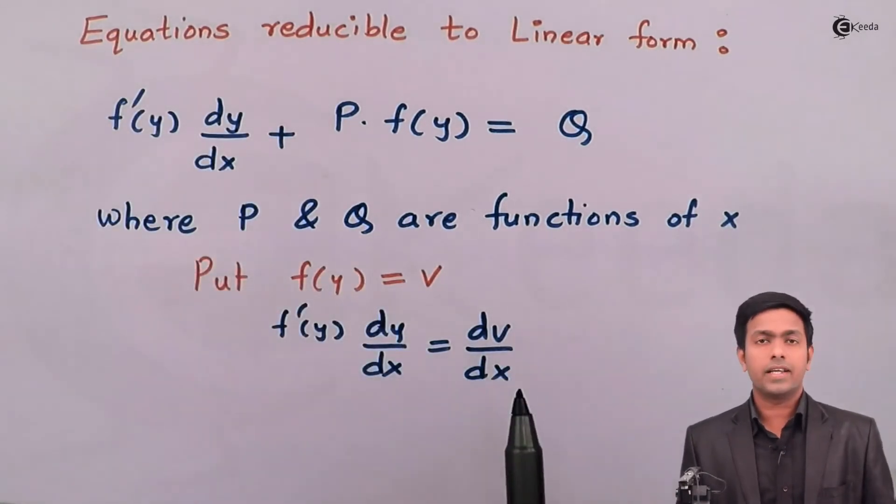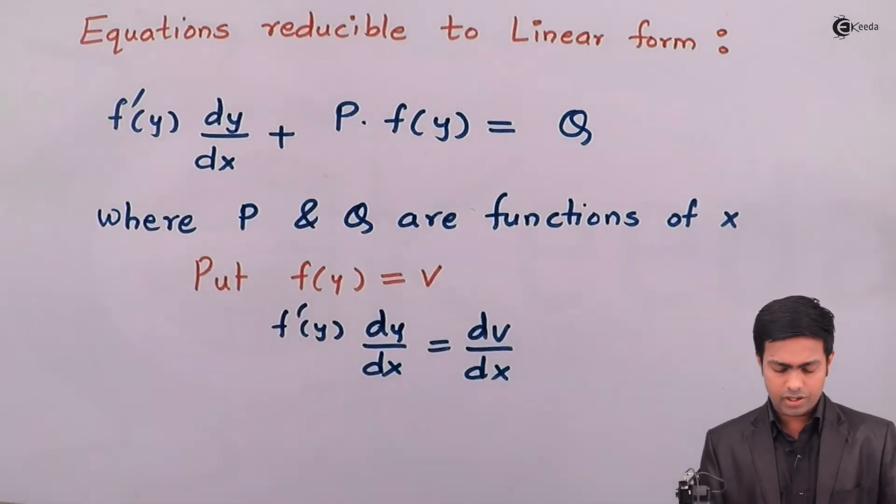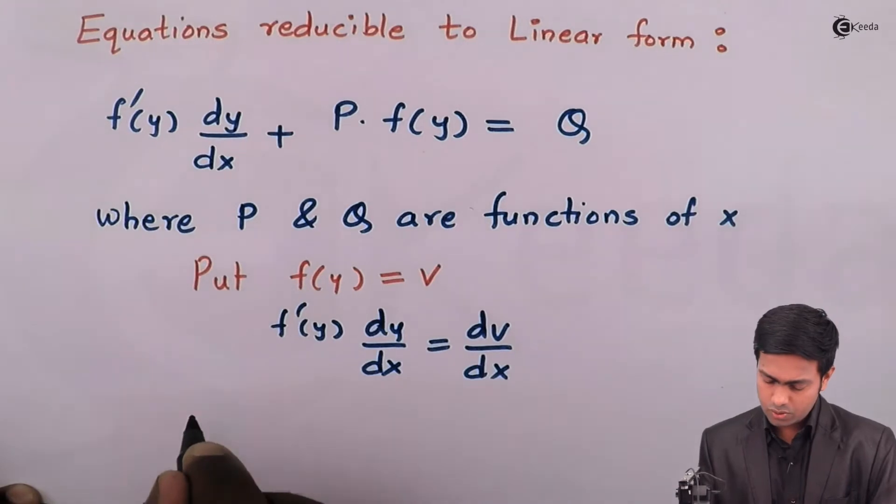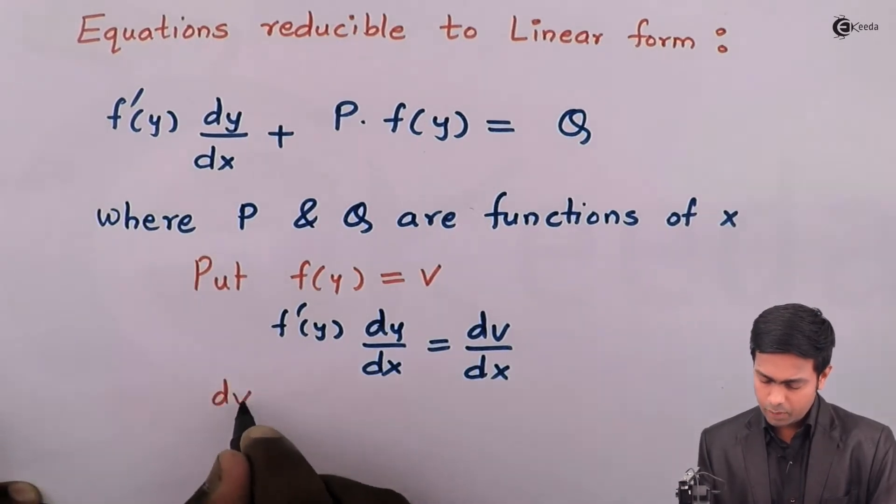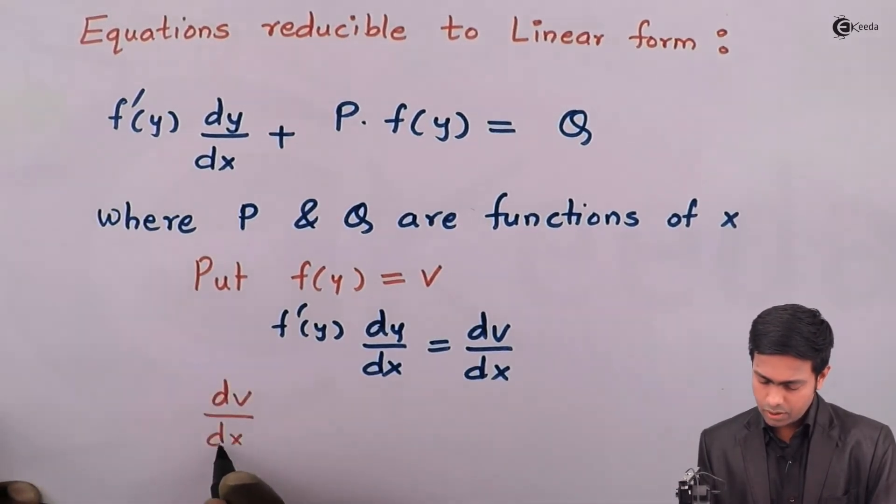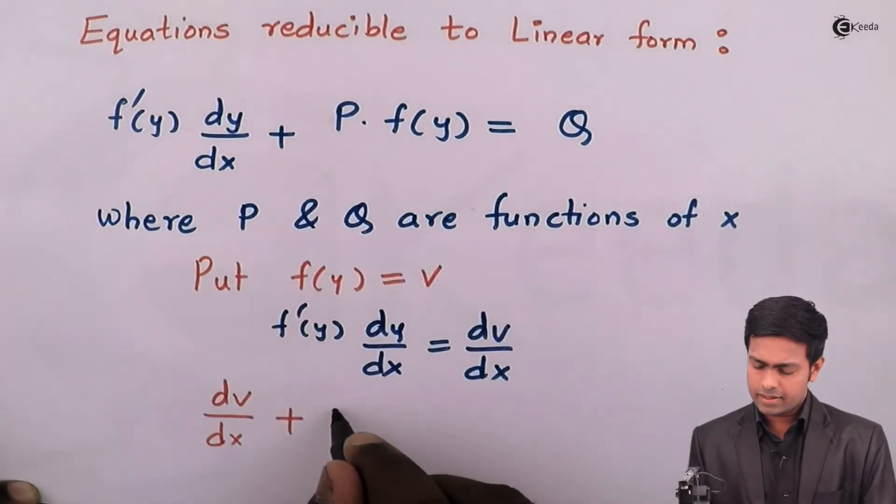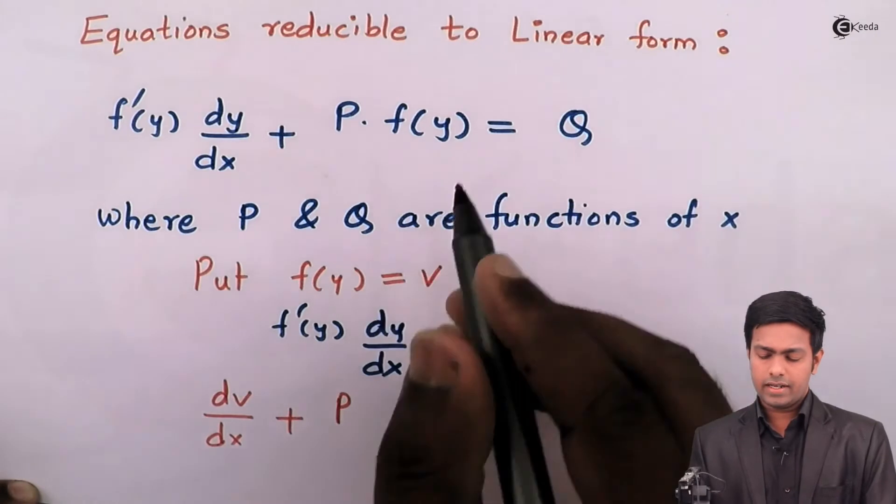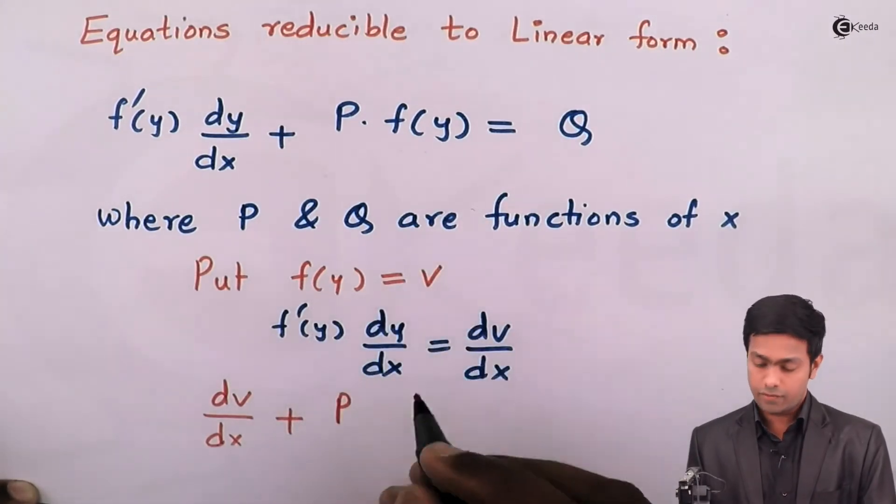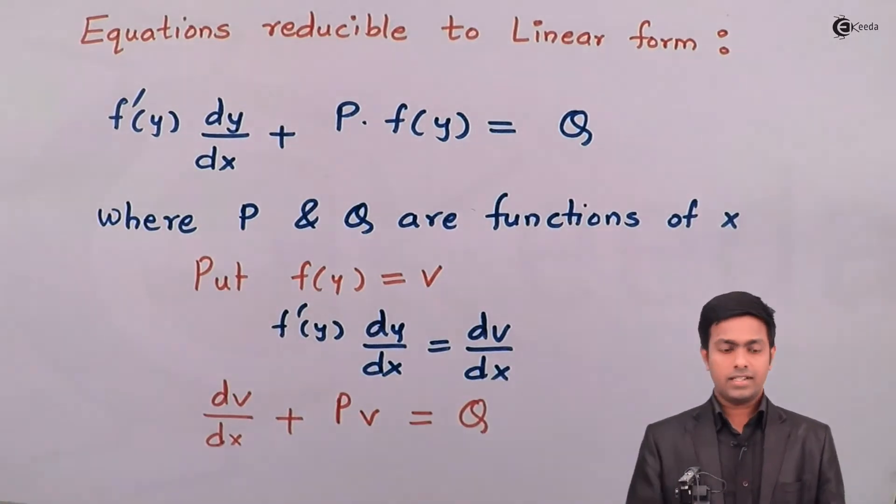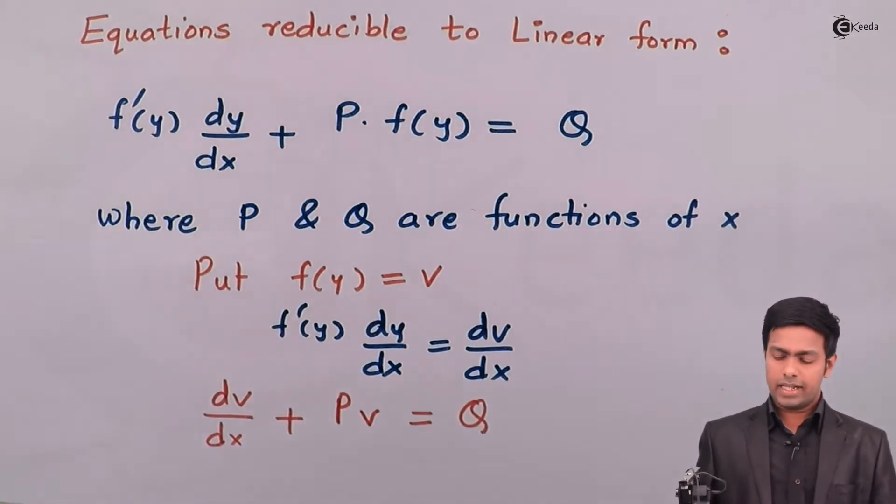You can see that we got the substitution for this f'(y)dy/dx, that is dv/dx. So this equation will become dv/dx as the first term, so it is dv/dx plus this P will remain as it is, f(y). Now we have substituted it as v, so dv/dx + Pv = Q.